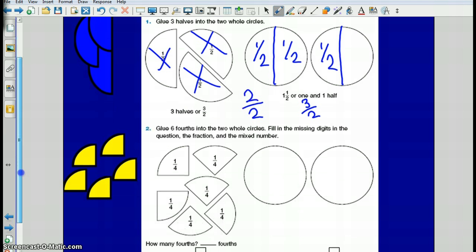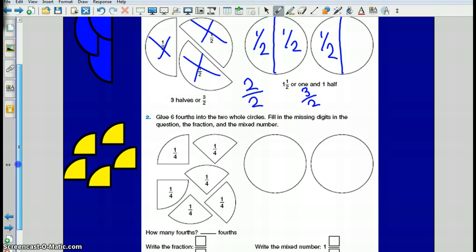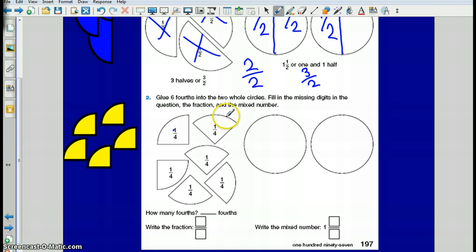Now, another way to look at it is we came down here to fourths. We talked about we have all these fourths over here. How many fourths do we have? Let's count them up. I have one, two, three, four, five, six. So I have six fourths.